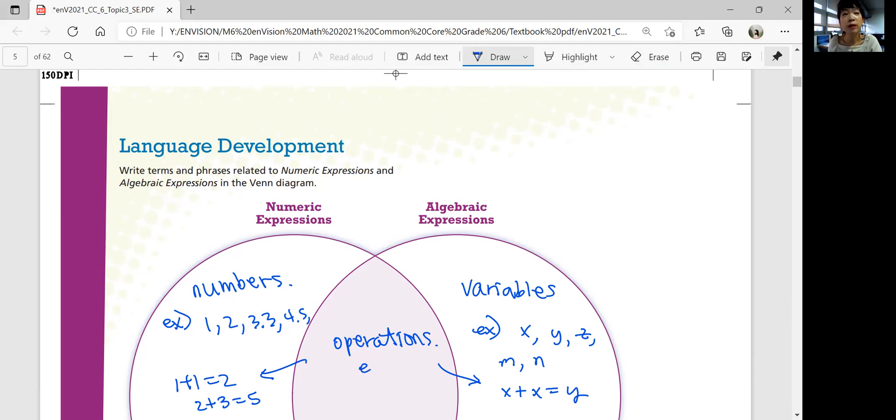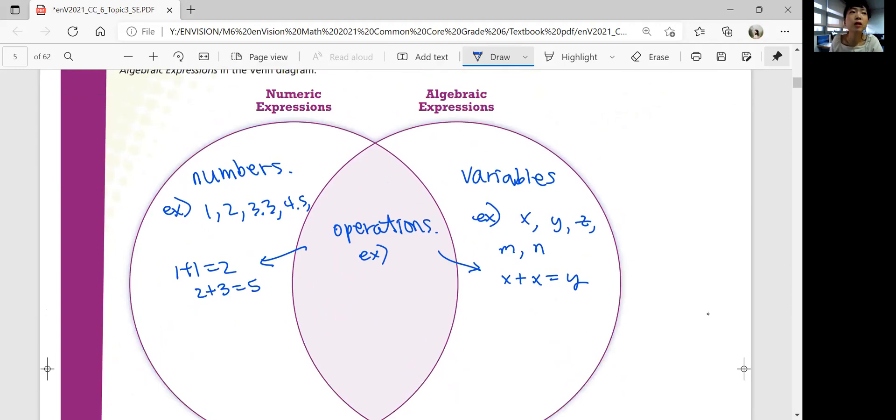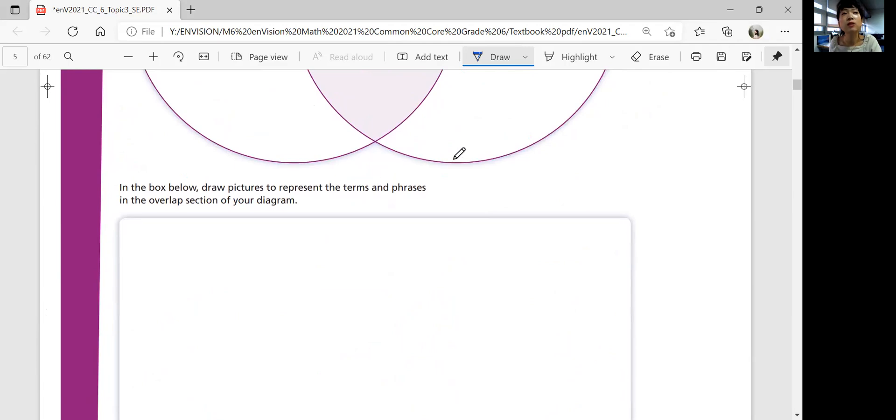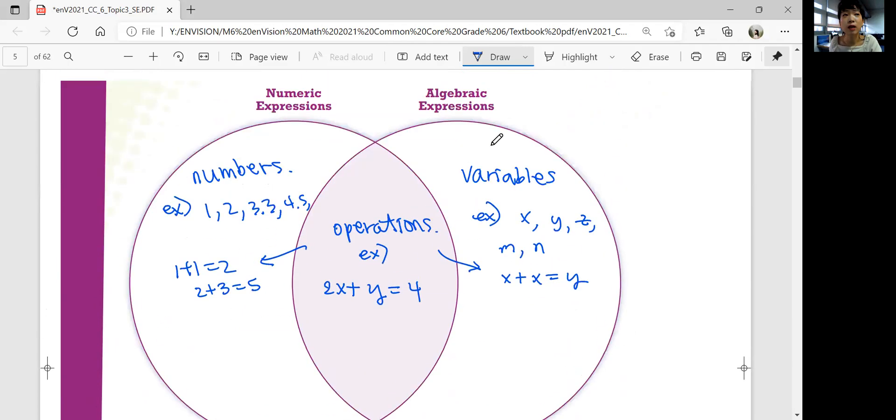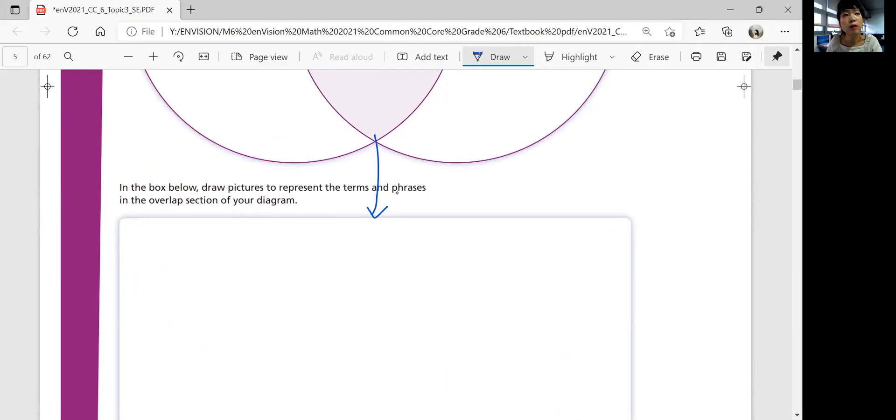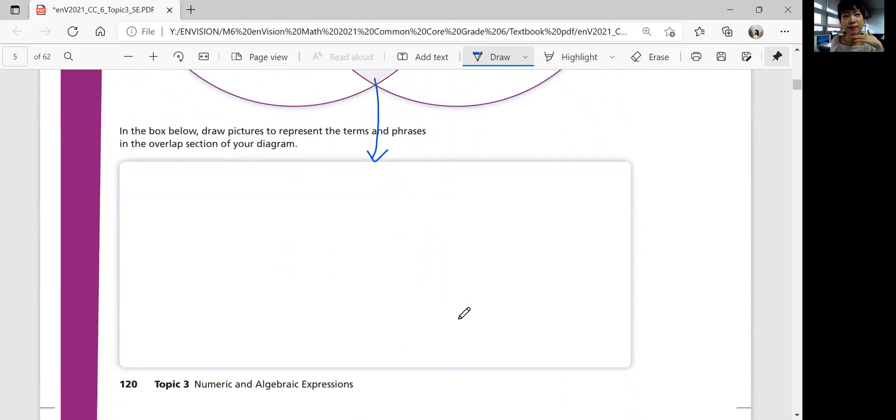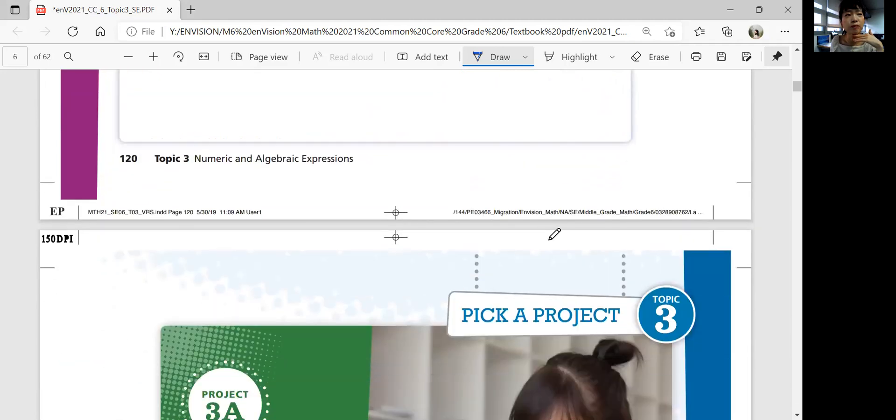Operations using both numeric expressions and algebraic expressions would be something like - can you give an example? Something like 2x plus y equals 4. You have a box - draw pictures to represent the terms and phrases with an overlap section of your diagram. What could this overlapping section represent? You can draw a variable and a number holding hands because they're together in this operation section. Draw your own picture.